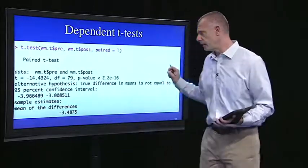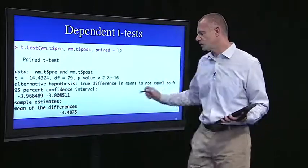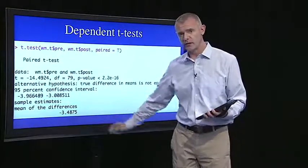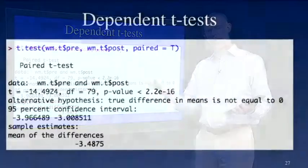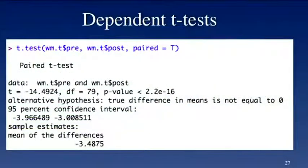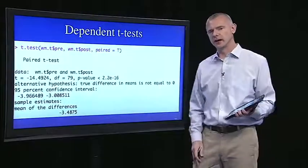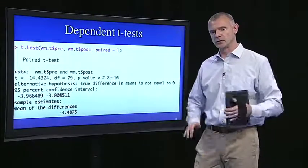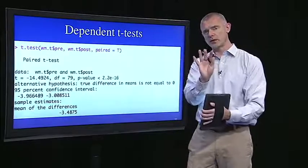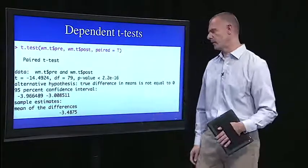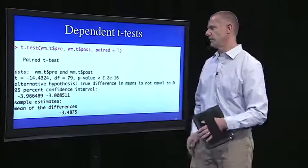Here's the dependent t-test for the training group. And what you see is the training group demonstrated a bigger difference from pre to post. So they're up at like three and a half versus only like two for the control group. And that's reflected in the t-value, of course, and in the p-value. Now, degrees of freedom is 79, because there were 80 subjects in the training conditions all together. Because there are four different training conditions, and I put 20 in each of them.